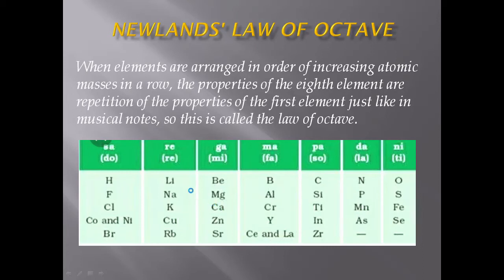He placed even two elements with different properties together in the same slot. For example, cobalt and nickel were kept together in one slot, and similarly barium and lanthanum were kept in one slot. He could not explain why he kept these two elements together.